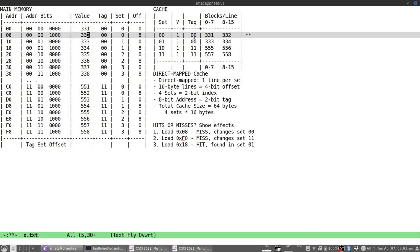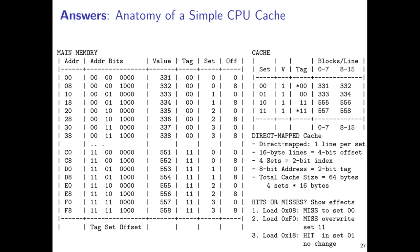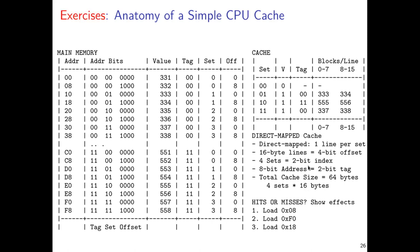The total cache size in this example is only 64 bytes. In actual CPU caches it's much larger to facilitate fast operation. Make sure to spend some time practicing this kind of table problem — you can rewind and rework the examples or try your own sets of loads using addresses shown in the table.